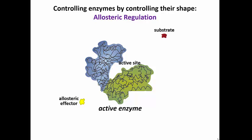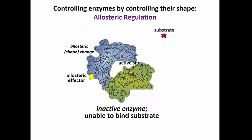So here we have the enzyme and substrate, and we have an allosteric effector, which in this case is going to bind to the enzyme at a site other than the active site, but it's going to cause a change in shape at the active site, which prevents the substrate from even attaching to the enzyme. So the inactive enzyme is no longer able to bind the substrate.